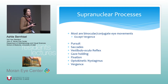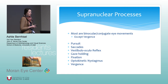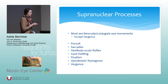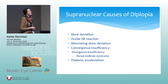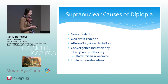Supranuclear processes mostly involve binocular processes such as pursuits, saccades, VOR, gaze holding, fixation, and optokinetic nystagmus. Some causes of diplopia that are supranuclear are rare, but these are the ones that are known: skew deviation, ocular tilt reaction, alternating skew, convergence insufficiency, divergence insufficiency, and thalamic esodeviation — some of these kind of fit in with each other.